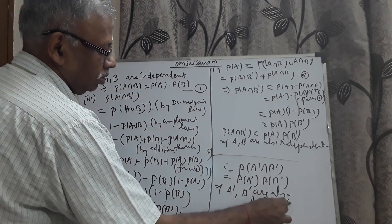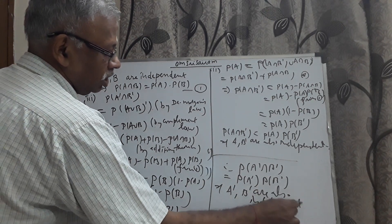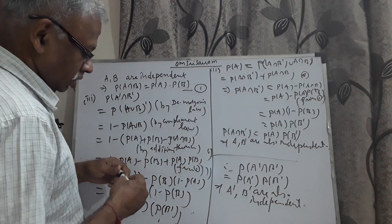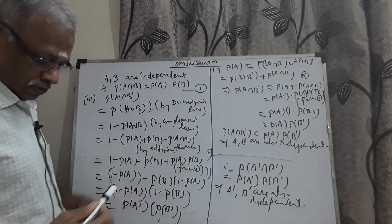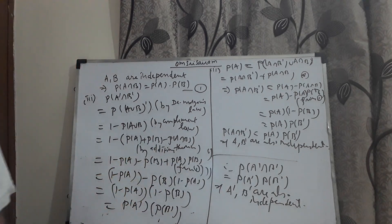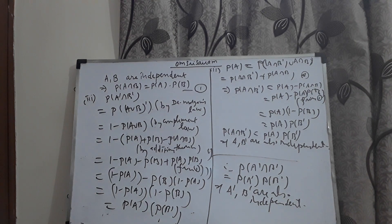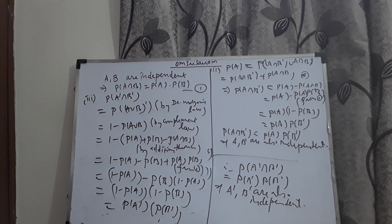They are also independent. Therefore, whenever A, B are independent as given, we can take for granted that A', B are also independent; A, B' are also independent; and A', B' are also independent. The proof of which is given in this particular problem.